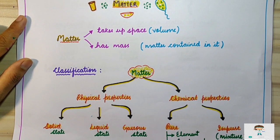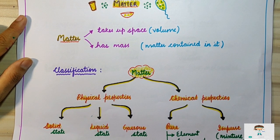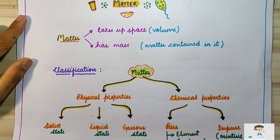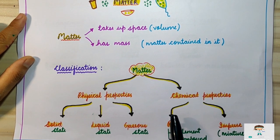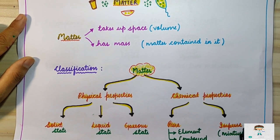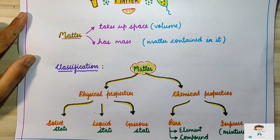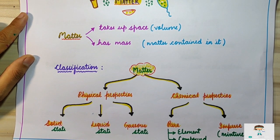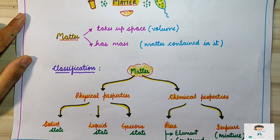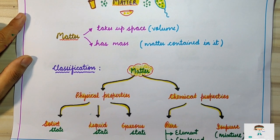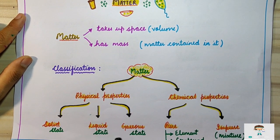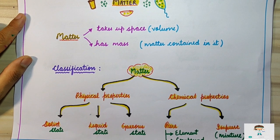Similarly, the compound water — whatever the source — if it has only one type of molecule, it is a pure substance. Impure substances are also known as mixtures, and they can be classified into two types: homogeneous mixture and heterogeneous mixture. These things we will study later in the chapter.